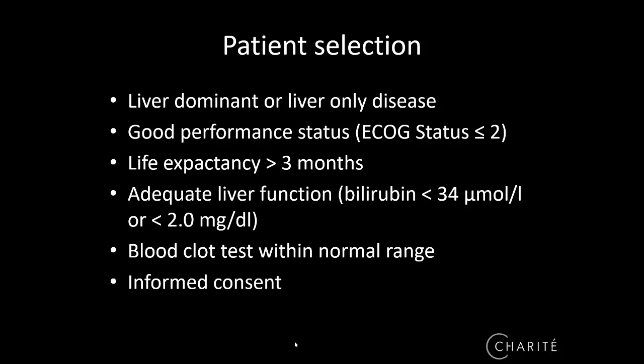Which patients do we typically select for radioembolization? These patients have to have liver-dominant or liver-only disease, with the liver being the life-determining organ. Patients also need a good performance status — up to ECOG status 2 — meaning they can care for themselves most of the day. They must have a life expectancy of more than three months, adequate liver function, and bilirubin below 34 micromol per liter or 2 mg/dL. Blood clotting tests must also be within normal range.